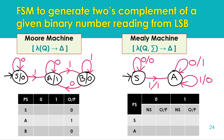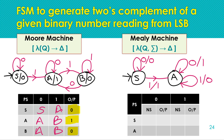Now drawing the transition table for the Moore machine. From state S: for input zero, next state is S; for input one, next state is A. From state A: for input zero, next state is A; for input one, next state is B. From state B: for input zero, next state is A; for input one, next state is B (self-loop). The output column for Moore machine: state S outputs zero, state A outputs one, state B outputs zero.